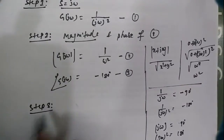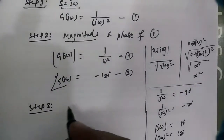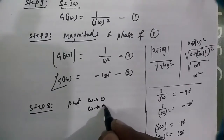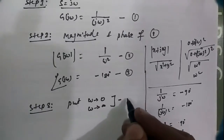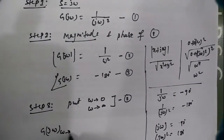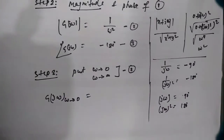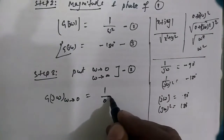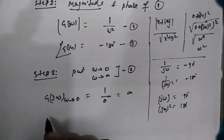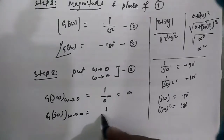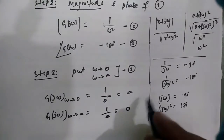Step 3: We substitute ω → 0 and ω → ∞ into equation 2. When ω → 0, G(jω) = 1/0 = ∞. When ω → ∞, G(jω) = 1/∞ = 0.